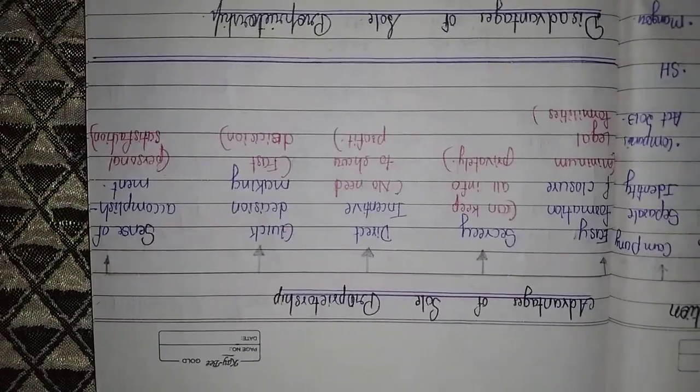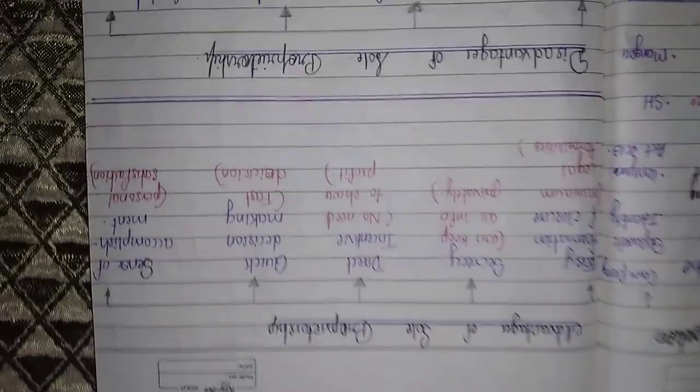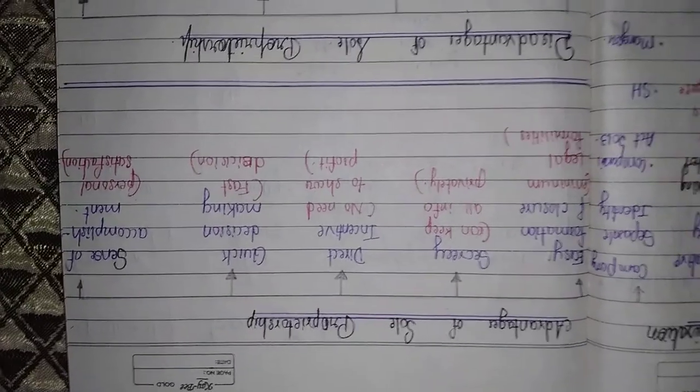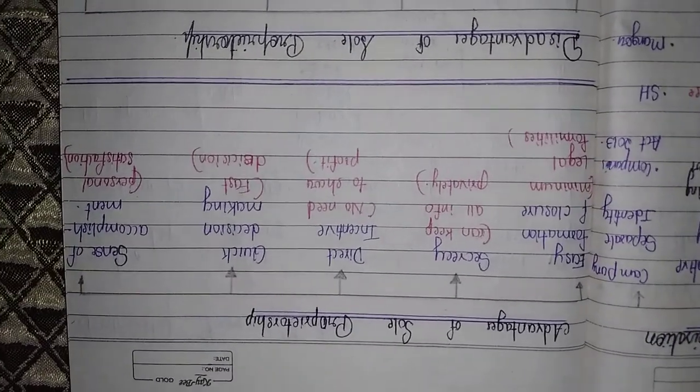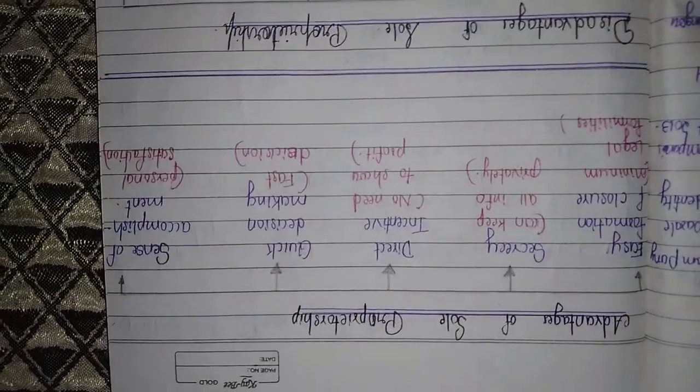The fourth point is quick decision making. As you are the only controller and owner of the business, your decision making will be fast.